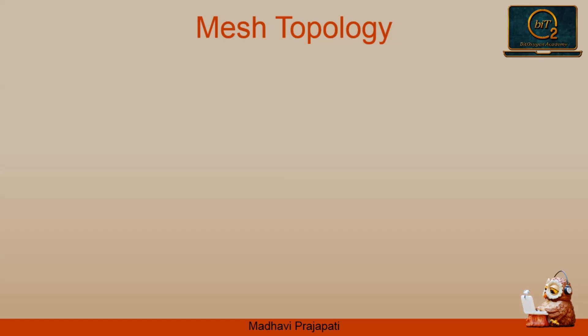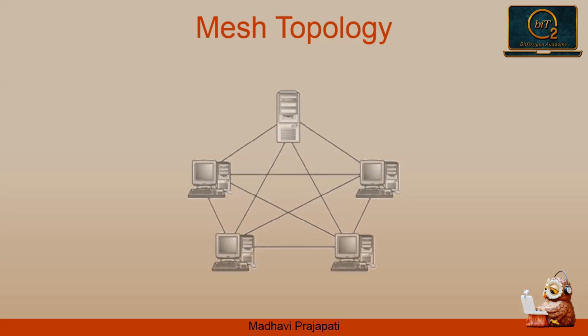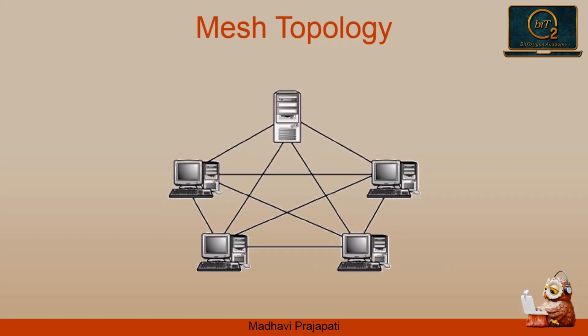In a mesh topology, every device has a dedicated point-to-point link to every other device. The term dedicated means that the link carries the traffic only between the two devices it connects. An example is the connection of telephone regional offices, in which each regional office needs to be connected to every other regional office.